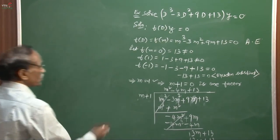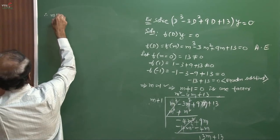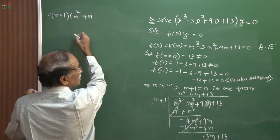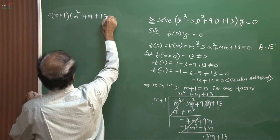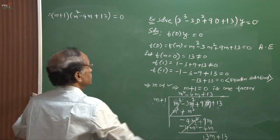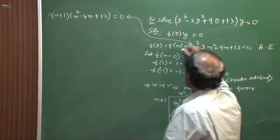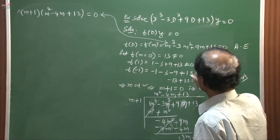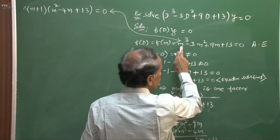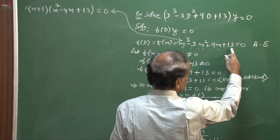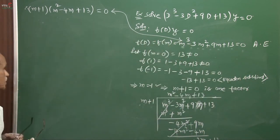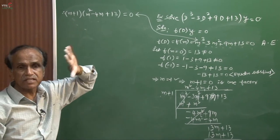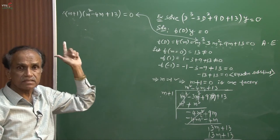Therefore the factorization is (m + 1)(m² − 4m + 13) = 0. This is the complete factorization of the auxiliary equation m³ − 3m² + 9m + 13 = 0, giving one linear factor and one quadratic factor. From the linear factor we directly get the root; from the quadratic factor we find the other roots.